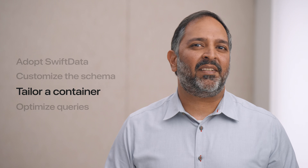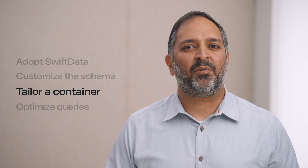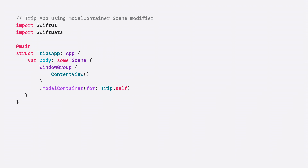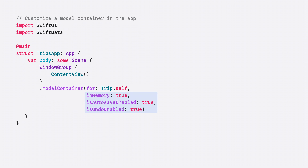Tailoring the model container allows an app to fine-tune its data location and how it is used throughout the app. The model container modifier is the easiest way to get started with Swift Data. Just by providing the model types to persist, Swift Data sets up a container for you. The model container modifier also lets you customize some of the properties of the container — for example, it can keep data in memory rather than on disk, enable or disable autosave, and have undo/redo support turned on or off. To customize the model container even more, like changing where it is saved on disk, you can build your own model container instance separately.